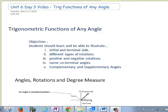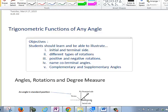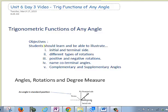Our objectives for today are, students should learn and be able to illustrate the following: You should be able to name an initial and terminal side of any angle, figure out an angle for different types of rotations, positive and negative, name co-terminal angles, and if I give you an angle, to give me a complementary and a supplementary angle.